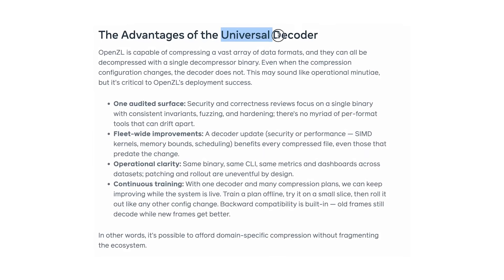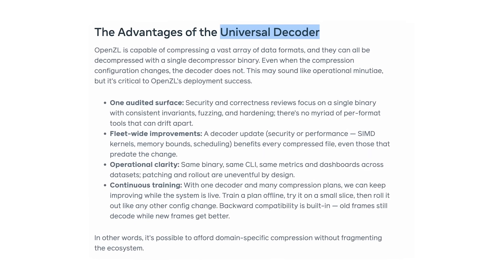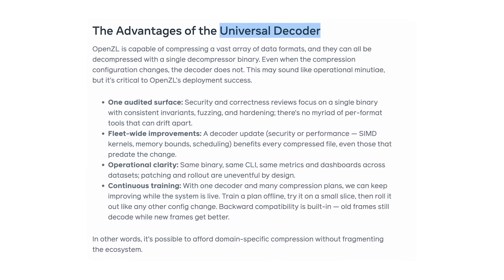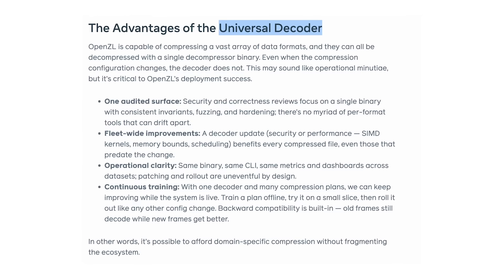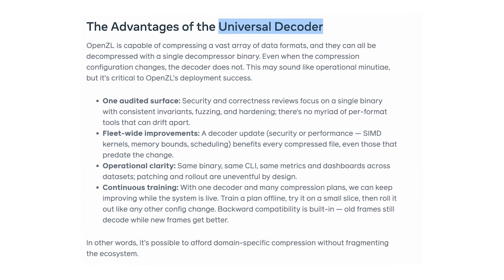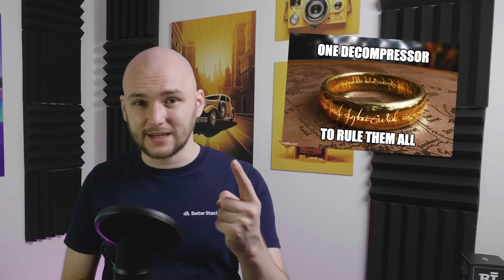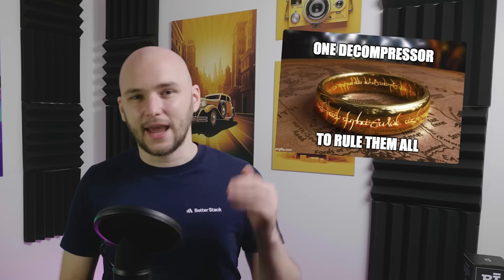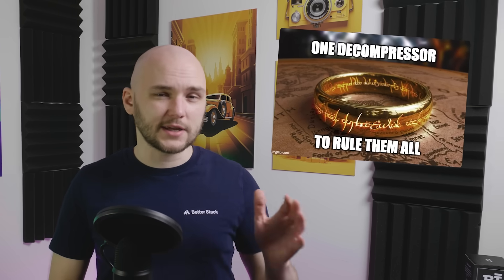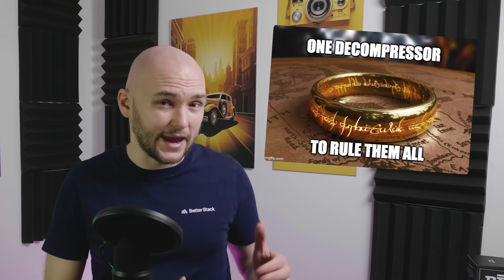Finally, you can decode it universally. The OpenZL decoder reads the recipe from the file and runs the transforms in reverse — the same binary, no matter the format. So instead of having one decompressor per data type, you get one decompressor that can handle any format, as long as it knows how to interpret the embedded plan.